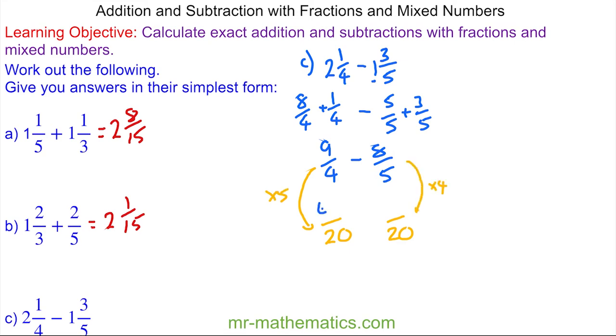Nine times five is forty-five. Eight times four is thirty-two. Forty-five take away thirty-two is thirteen over twenty.